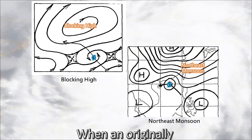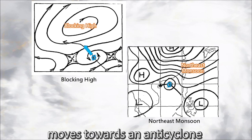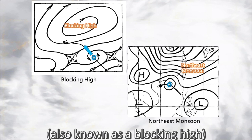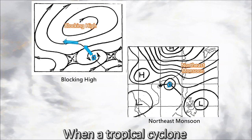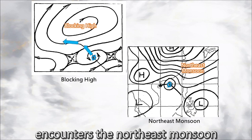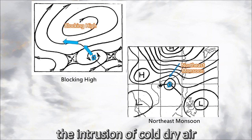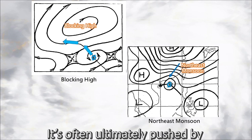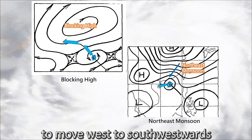When an originally northwestward moving tropical cyclone moves towards an anticyclone, also known as a blocking high, its track will turn left and move westwards. When a tropical cyclone encounters the northeast monsoon, it usually weakens due to the intrusion of cold dry air, and is often ultimately pushed by the northeast monsoon to move west to southwestwards.